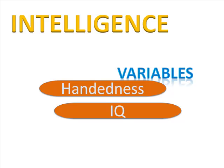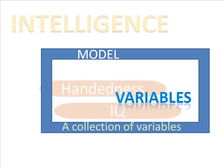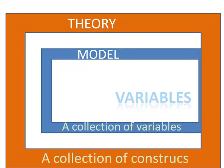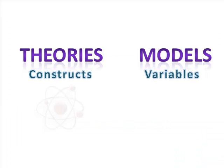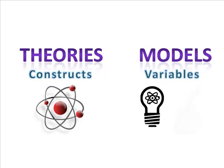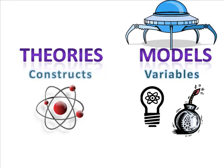A collection of variables is called a model. Theories are composed of constructs and models are composed of variables. Theories are general premises and ideas. Models are specified tests of theories. Theories are the thinkings of atoms. Models are the application of atomic theory to atomic energy plants, atomic bombs, and atomic spaceships. The theory specifies the process. The model determines the practical application.